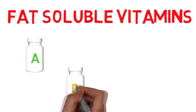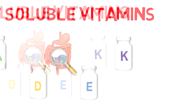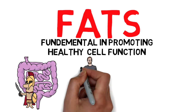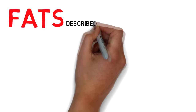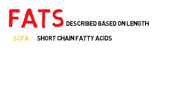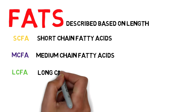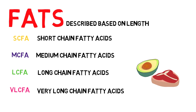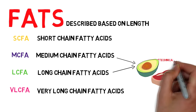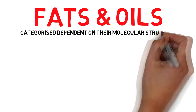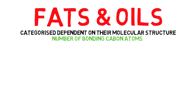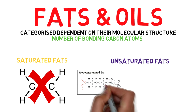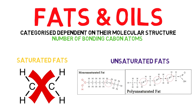Fat-soluble vitamins such as A, D, E and K can only be digested, absorbed and transported in conjunction with fats. Fats play a fundamental role in promoting healthy cell function, protecting organs against shock, maintaining body temperature and maintaining healthy skin and hair. Most fats in the food that we eat are made up of medium-chain fatty acids and long-chain fatty acids, whether the source is vegetable or animal in nature. Fats and oils are categorised dependent on their molecular structure, in particular the number of bonding carbon atoms. Saturated fats have no double bonds between the carbons in the chain, whereas unsaturated fats have one or more double bonds between the carbon atoms. Those with multiple double carbon bonds are referred to as polyunsaturated fats.